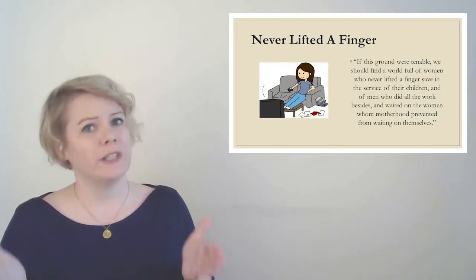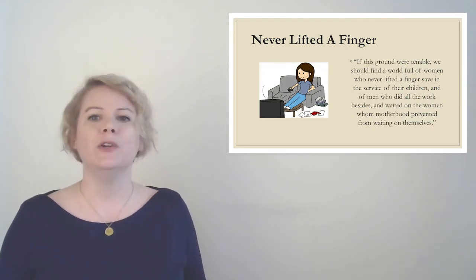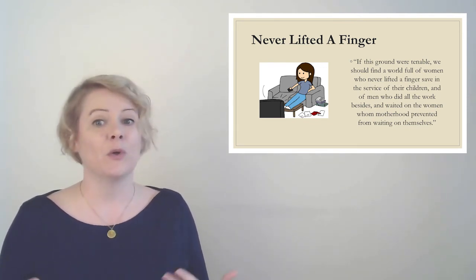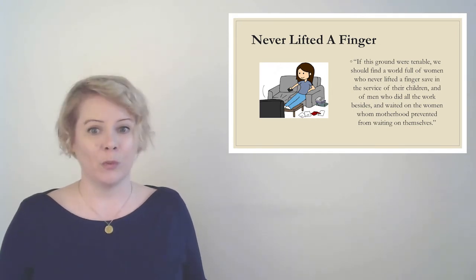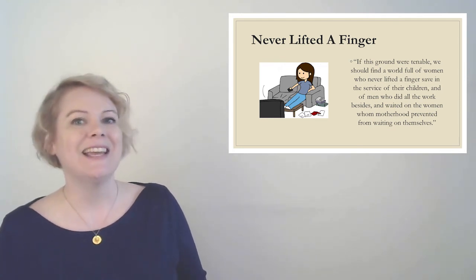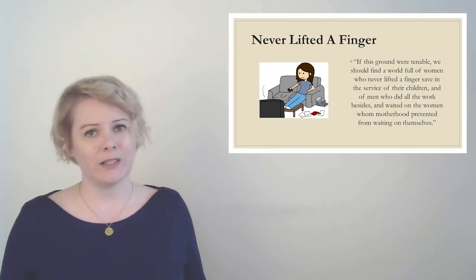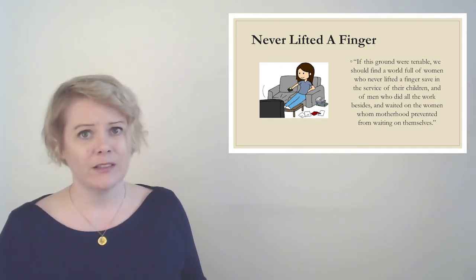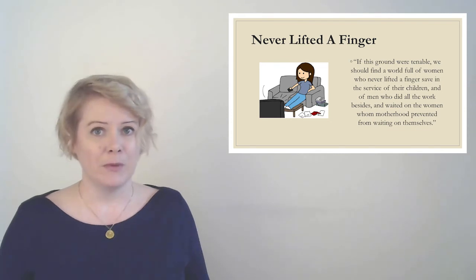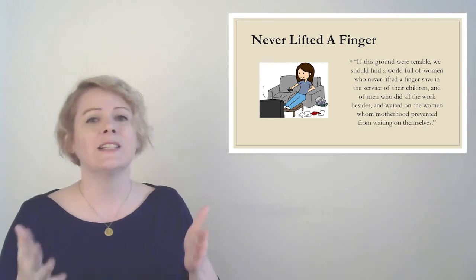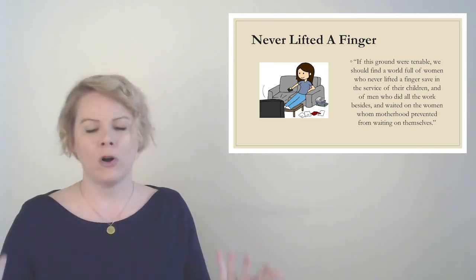In spite of her supposed segregation to maternal duties, the human female the world over works at extra maternal duties for hours enough to provide her with an independent living, and then is denied independence on the ground that motherhood prevents her from working. So basically, Gilman is super frustrated. She's like, people keep acting like motherhood is all consuming, but have you not noticed that we're also doing all this other stuff and motherhood? Have you not noticed that in addition to motherhood, we are also running the lives for the rest of the adults? We are also running the church, the charity organizations. We're doing all this stuff. We're just not getting paid. And you're acting like we're not capable of doing all this other stuff, even though clearly we're doing it all around you all of the time. If this ground were tenable, we should find a world full of women who never lifted a finger, save in the service of children, and of the men who did all the work besides, and waited on the women who motherhood prevented from waiting on themselves. So basically, she's like, yeah, if this were true, if the only thing that women did was take care of children, nothing else would get done and you would notice that.